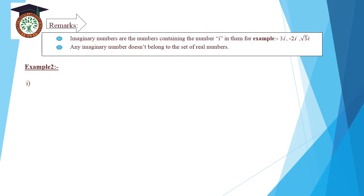Remark: imaginary numbers are numbers containing i, in forms such as negative 3i, negative 2i, square root of 5 times i. Any imaginary number does not belong to the set of real numbers.